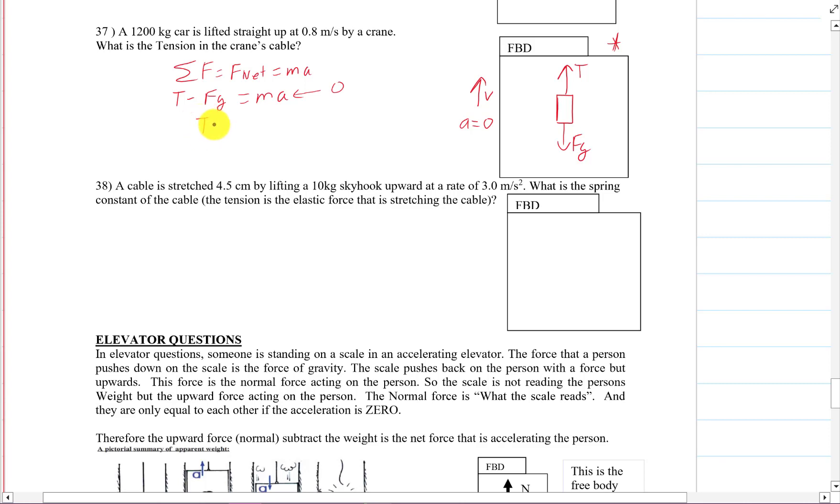So that means tension minus force of gravity has to equal zero. That means the tension has to equal the force of gravity. The up has to equal the down. And in that case, the force of gravity is just mg, which is 1200 kilograms times 9.8.